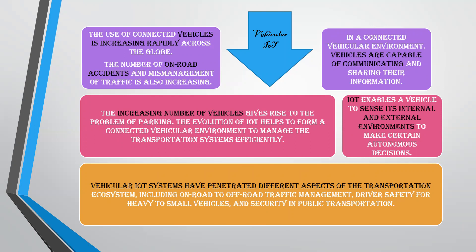Internally, depending upon the car's capability, and externally, depending upon the traffic and the available free parking lots, the sensor will sense things and intimate the user so that a decision can be taken automatically. This vehicular IoT has to be done for both on-road and off-road systems. Even before starting from home, one must know how the traffic is on different routes. Management of traffic and safety of the drivers — whether small or heavy vehicles — all safety must be provided. That's why we have ended up building an IoT architecture for vehicles.